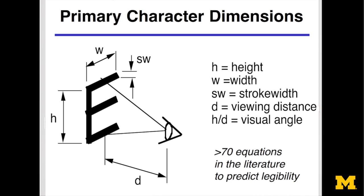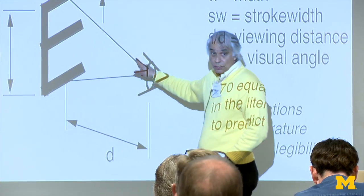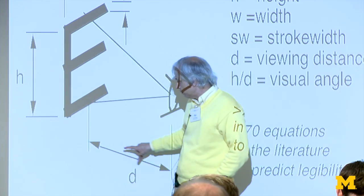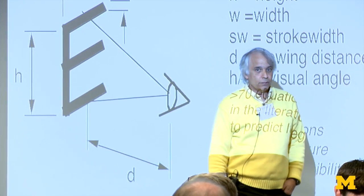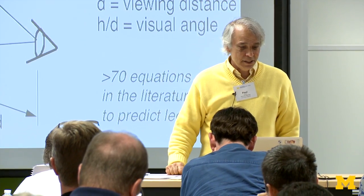Going one step further: as I indicated, height matters most. But really, it's not height independent of everything else. What matters most is the visual angle — the relationship between the distance and height. If you get the height-over-distance ratio big enough, you're going to see it. If it's really far away, make it taller, and then you can see the character.